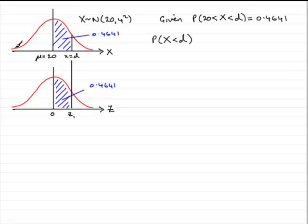Well, we know that up to the mean here, that area is 0.5. And so the probability of being less than d is going to equal 0.5 plus the 0.4641. And if you add that up, you're obviously going to get 0.9641.